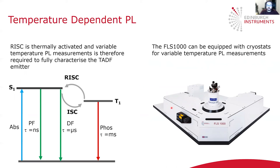The FLS1000 can also be fitted with a cryostat to do temperature-dependent photoluminescence. There is this reverse intersystem crossing process where the population from the triplet state is thermally assisted back to the singlet. Since this is a thermally assisted process, its efficiency varies with temperature, and using a cryostat with the FLS1000 allows you to characterize this transition.